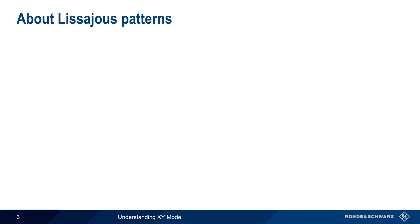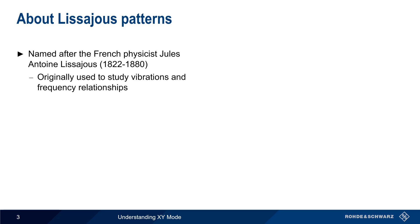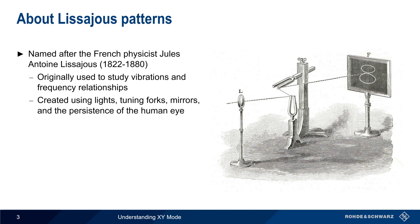Lissajous Patterns, also called Lissajous Curves or Lissajous Traces, are named after the 19th century French physicist Jules-Antoine Lissajous. Lissajous was interested in studying the relationship between different frequencies, and used a collection of lights, tuning forks, mirrors, and the natural persistence of human vision to visually display these relationships.